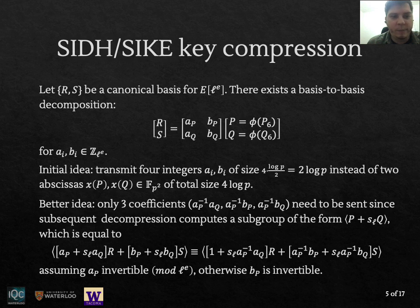An improvement to this approach was given by Costello and others that showed that only three coefficients need to be transmitted. The observation is that during the compression we have to compute a subgroup generated by the point P + s_ℓ Q and if you expand this out in terms of R and S you can multiply this point by the inverse of a_P if a_P is invertible mod ℓ^e and this still gives an equivalent subgroup. So basically you just need these three coefficients with multiples of a_P^{-1} and if a_P is not invertible by construction we will have that b_P is going to be invertible because of this base change matrix.